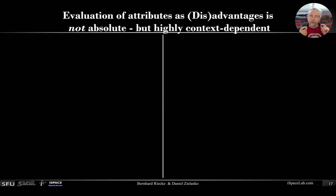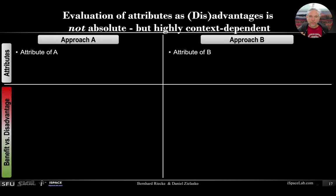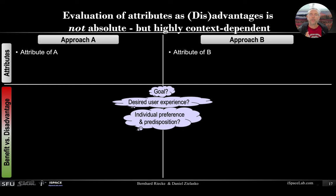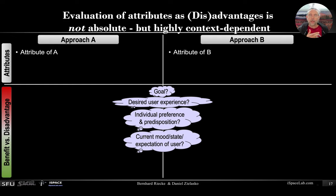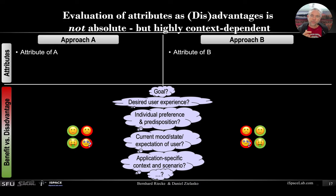Our main point is really that whether we evaluate an attribute as an advantage or disadvantage is not an absolute thing — it is highly context-dependent. We can apply this idea to just about anything you want to compare. Given approaches A and B with different attributes, we can distinguish them and think about the context and goal: What do you really want to achieve? What's the desired user experience? What are the individual preferences and predispositions? Is somebody able to move? Do they get sick easily? What is the current mood, state, or expectation of the user? What are the application-specific context and scenario? All of these aspects determine whether an attribute can be utilized as an advantage or disadvantage for each approach.